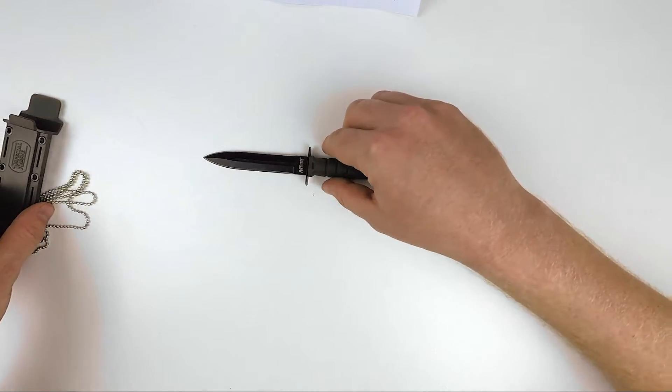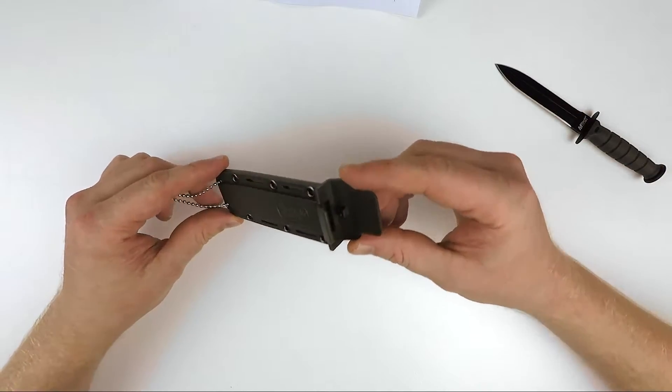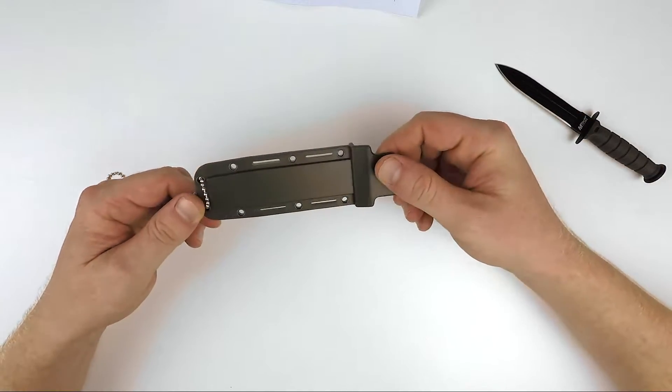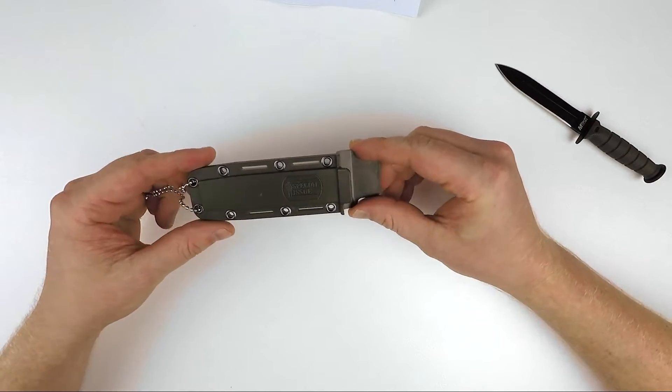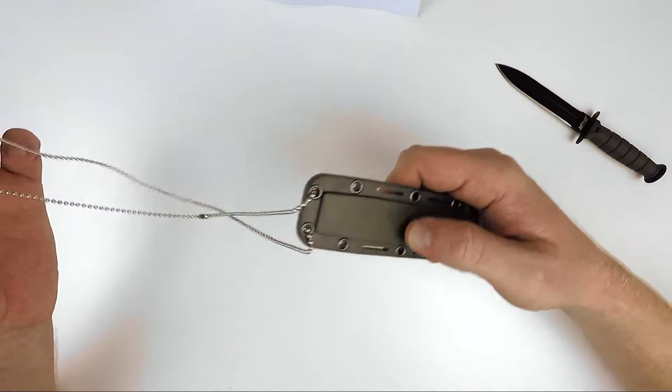Now let's jump onto the sheath really quickly. This is an awesome little form-fitted plastic sheath, and it comes in the OD green to match the handle color as well. It comes with the neck chain, just a very standard neck chain.